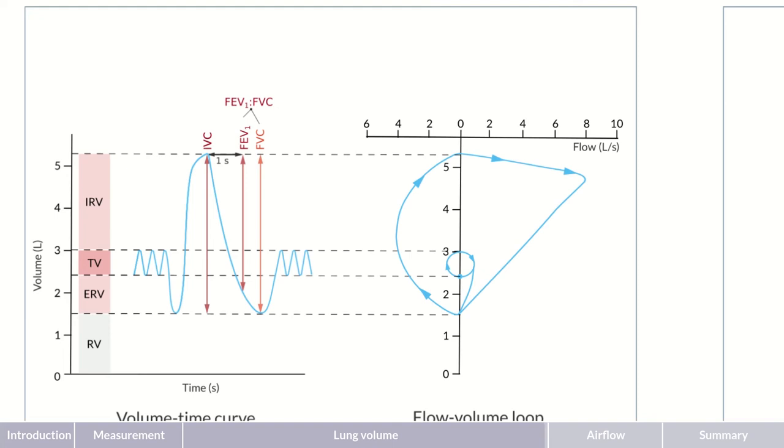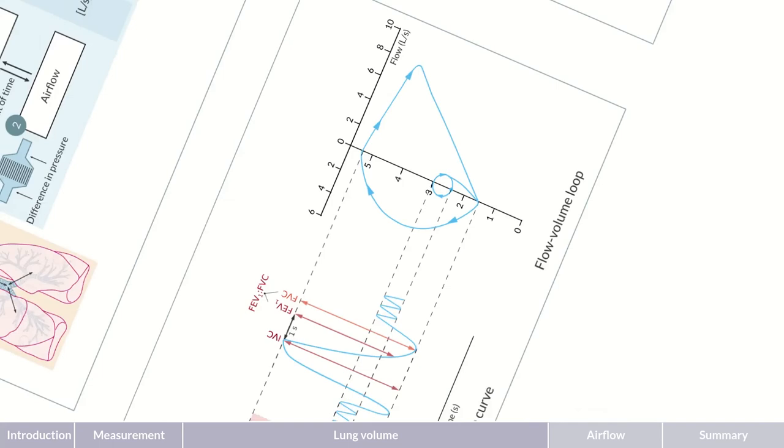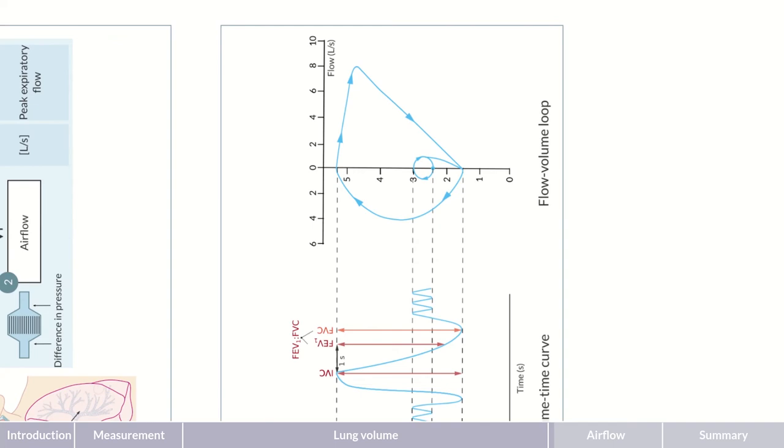Let's rotate the diagram. Now, here the airflow rate is plotted on the x-axis and volume on the y-axis. The height of the curve indicates the peak flow. The large upward deflection is the maximum airflow rate, the peak expiratory flow, in short, PEF, that's reached shortly after starting expiration.